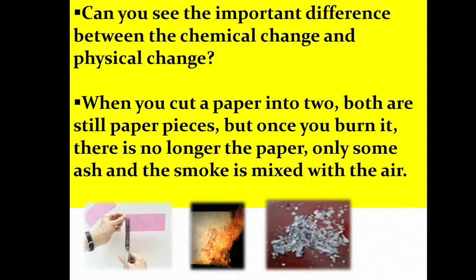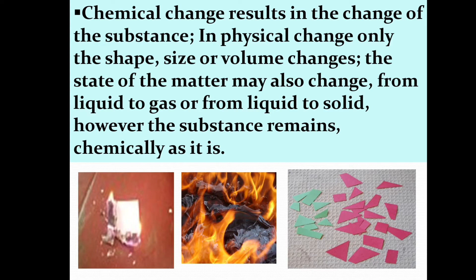Notice the important difference between chemical and physical change. When you cut paper into two pieces, both are still paper. But once you burn it, there is no longer paper — only ash and smoke mixed with air. A chemical change results in a change of substance, whereas in a physical change only the shape, size, or volume changes.